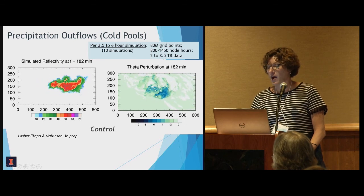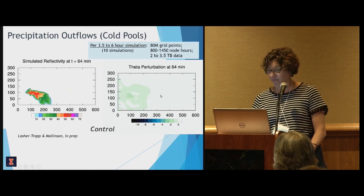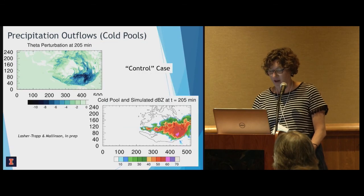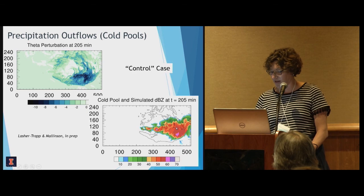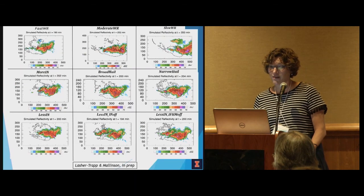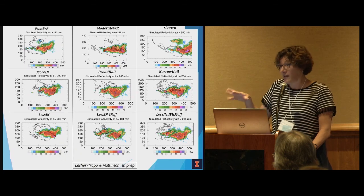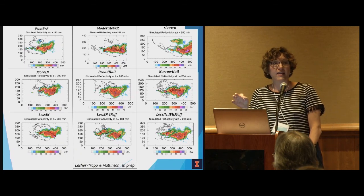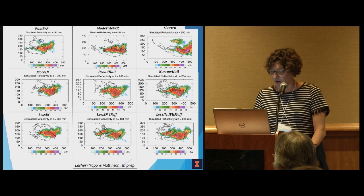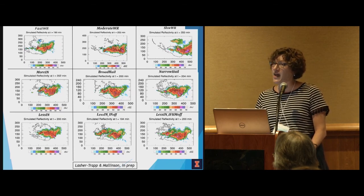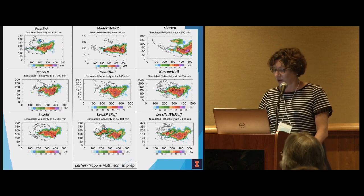Here's a still frame of the control case, showing the black outline of the cold pool superimposed on the simulated radar reflectivity. We did nine more simulations, tweaking differences in how precipitation is created or characteristics that alter precipitation. We get a nice variety across the 10 simulations from which we can start pulling out some general relationships.